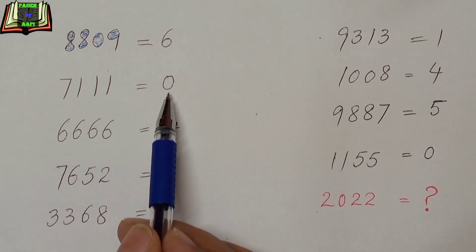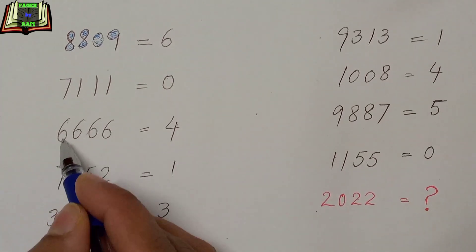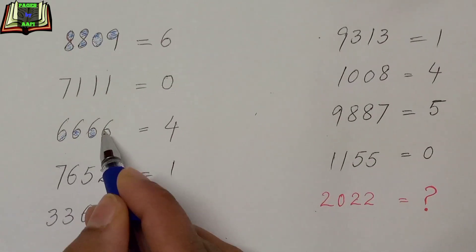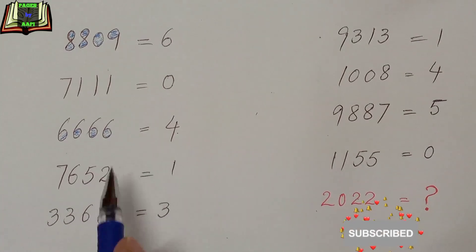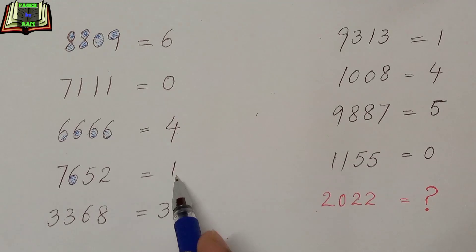Now let's move on to the next number, 7111. As you can see there is no hole or circle in it, so that's why it's equal to 0. In the next number 6666, there are 1, 2, 3, 4 circles, that is why it's equal to 4.